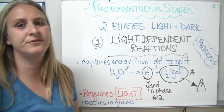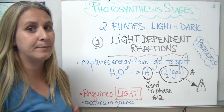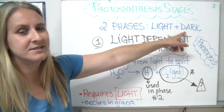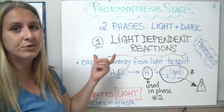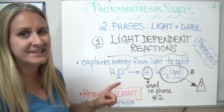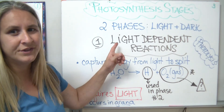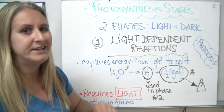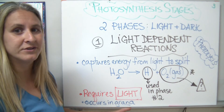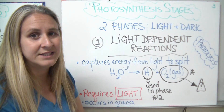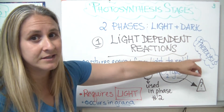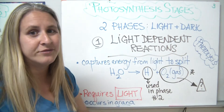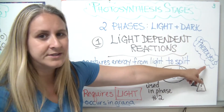The next thing we're going to talk about are the stages of photosynthesis. Photosynthesis doesn't happen all at once — there are two phases or stages. They are called the light-dependent reactions, and some people call them the dark reactions. The first phase has a few names: the light reactions, the light-dependent reactions, or photolysis — they all mean the same thing. If you depend on light, you need it, and this step requires light. Photolysis: photo means light, and lysis means to break apart. So we're going to use light to break something apart.